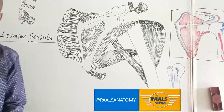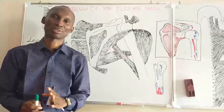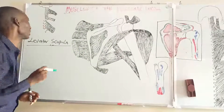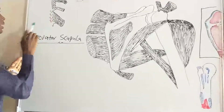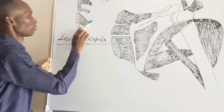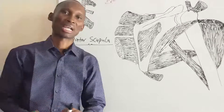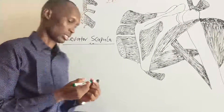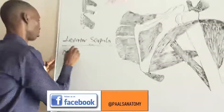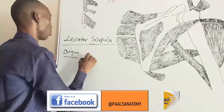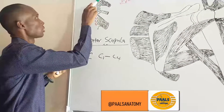Levator scapula takes its origin from the region of the neck. It's a slender muscle that runs from the neck. This muscle takes origin from the upper four cervical vertebrae — C1 to C4. That is the origin.